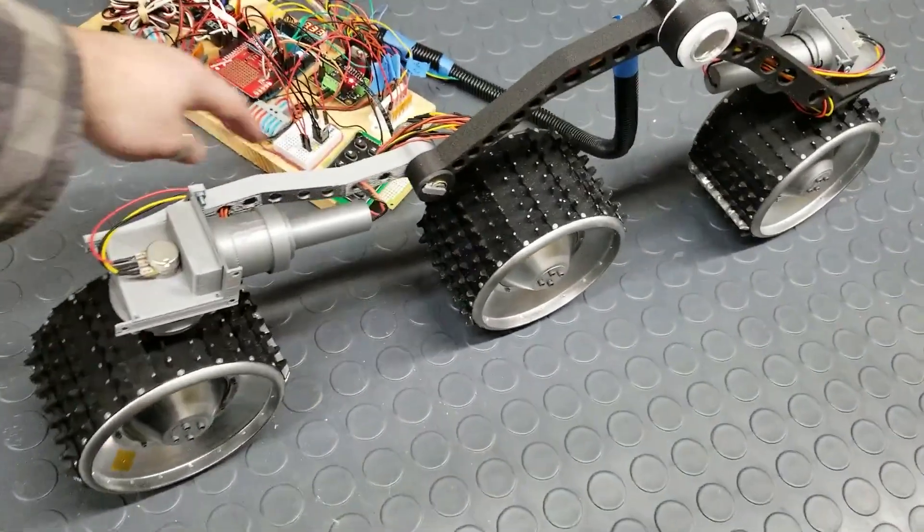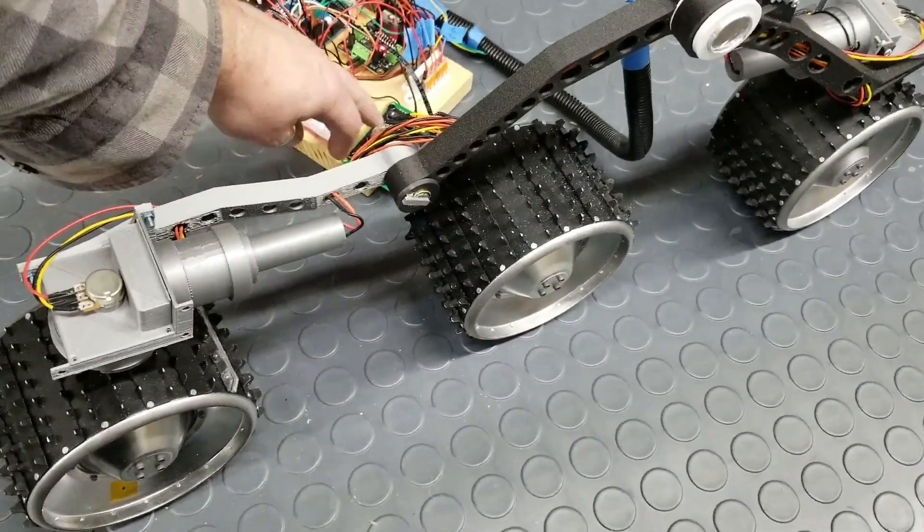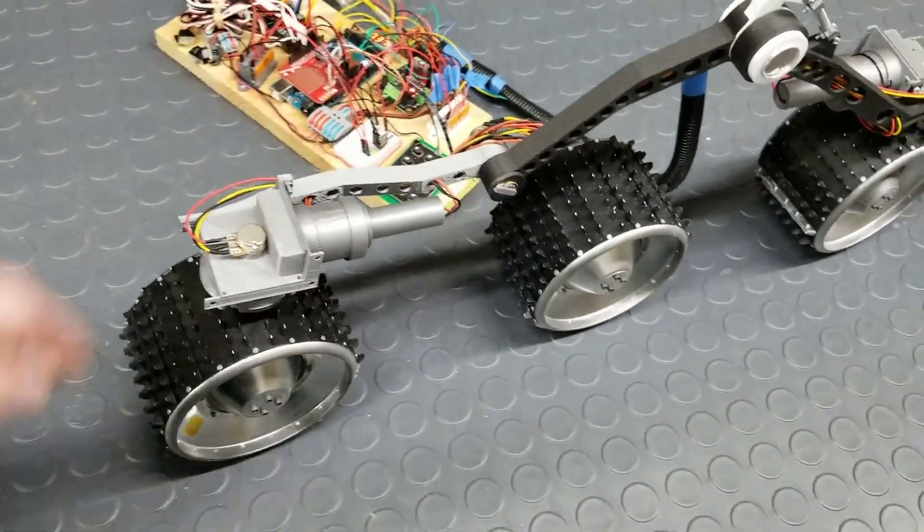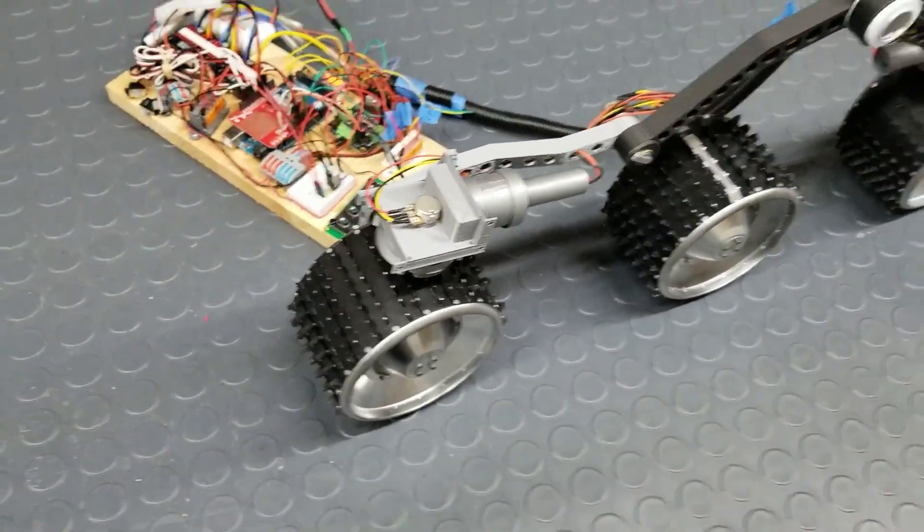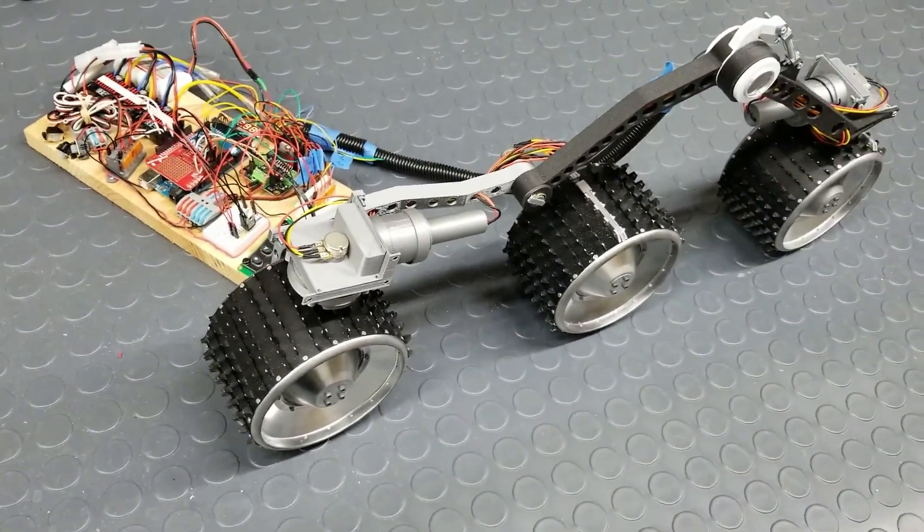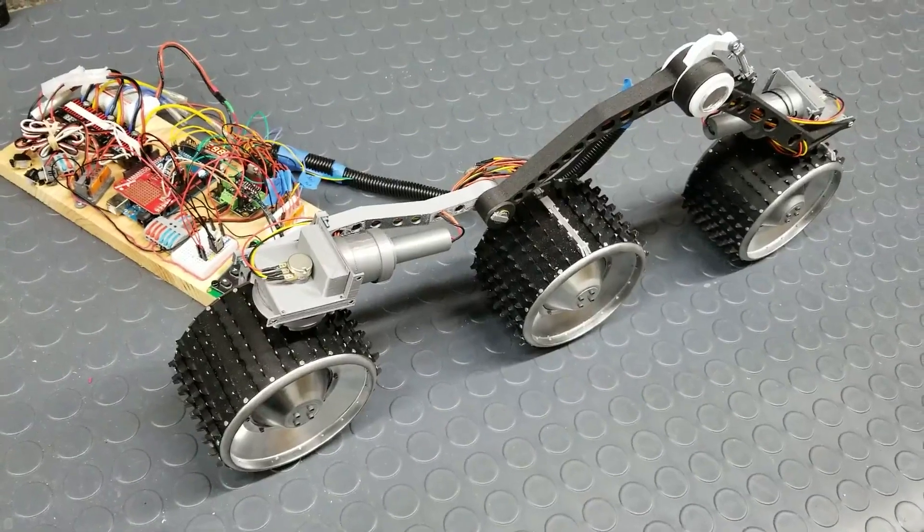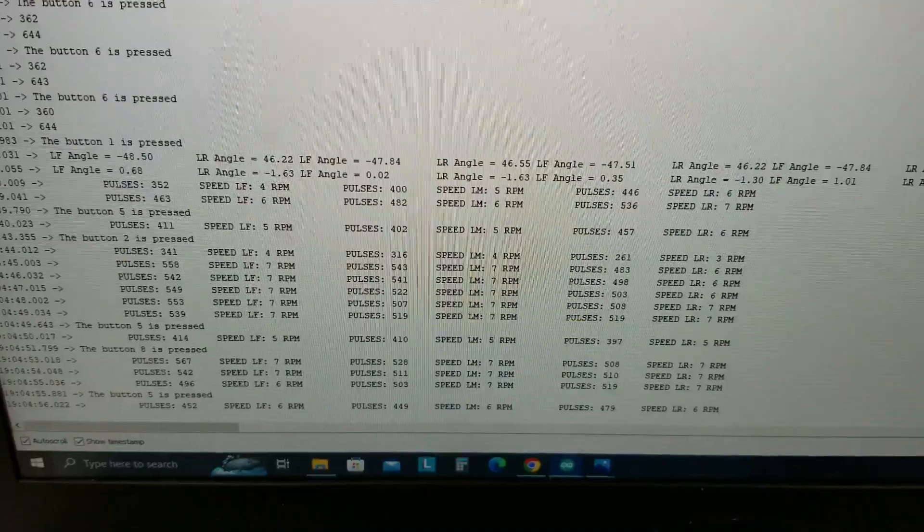You can see it's nice and slow, much like Sojourner was. This is actually seven RPMs. Sojourner ran at one RPM. Let me show you real quick what I have going on on the screen.